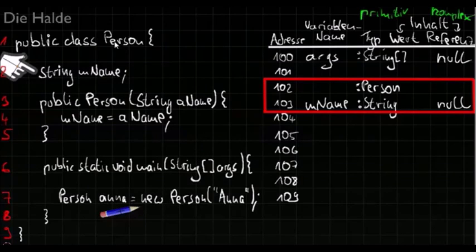Now we've created the member variable mname. mname is an instance of the class person. And the next step is to call the constructor. So we call new person and we put Anna into the constructor. The constructor can be found at line 3.